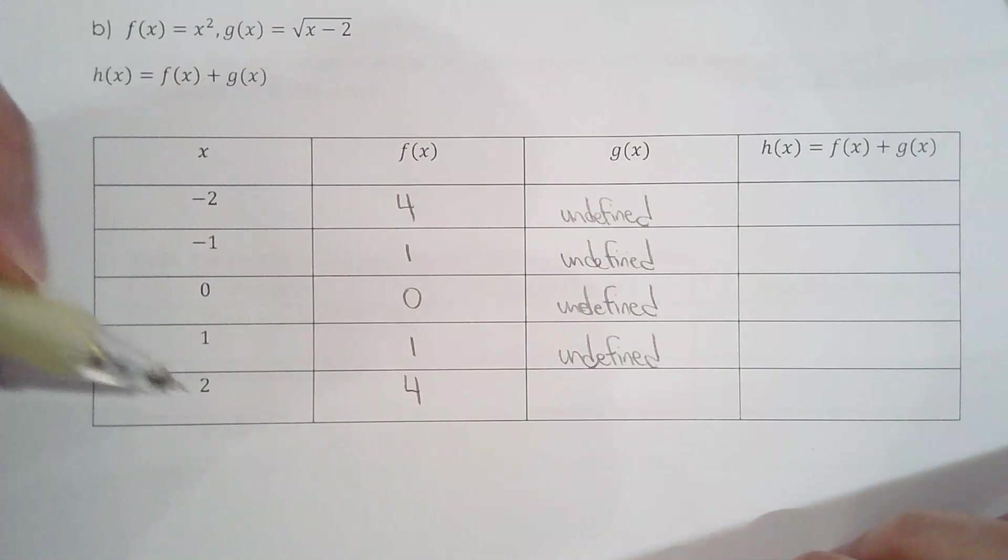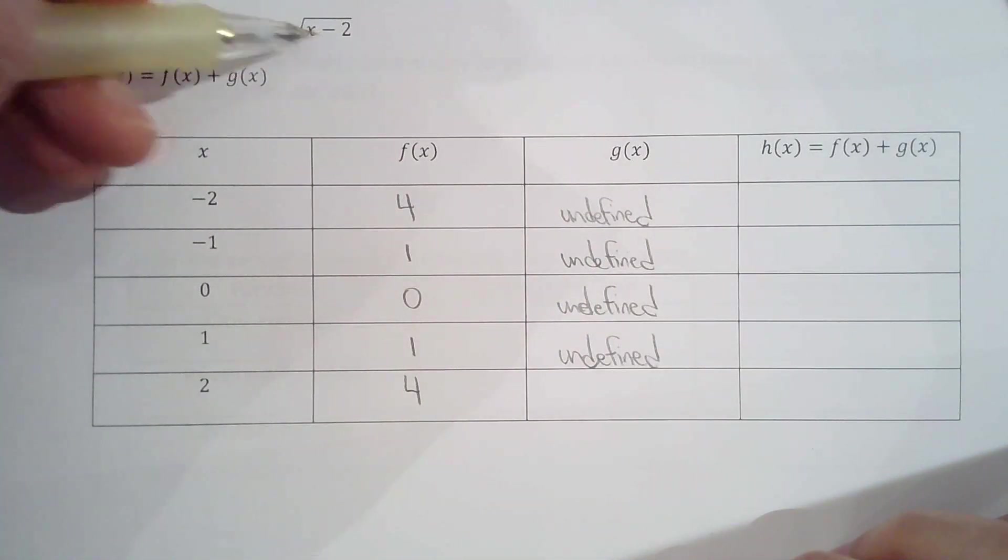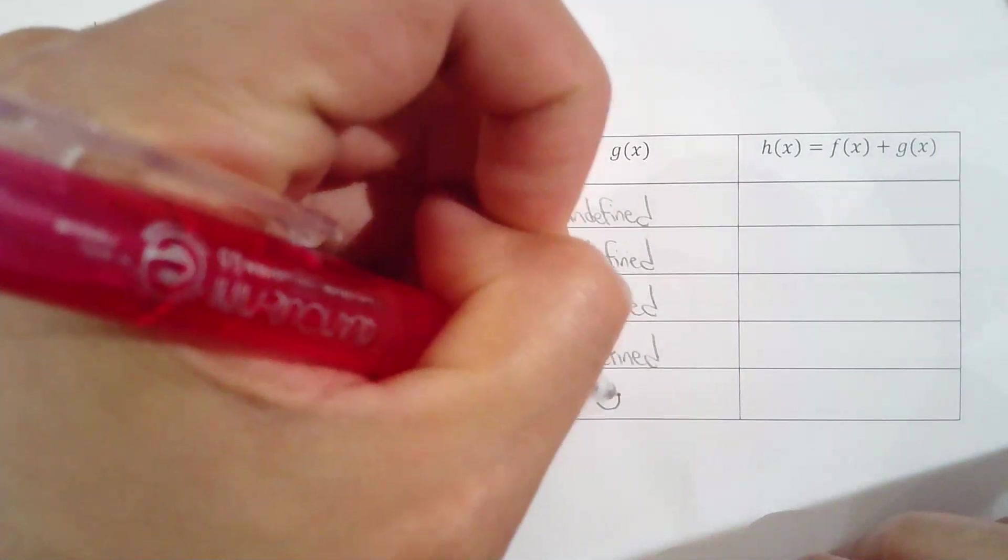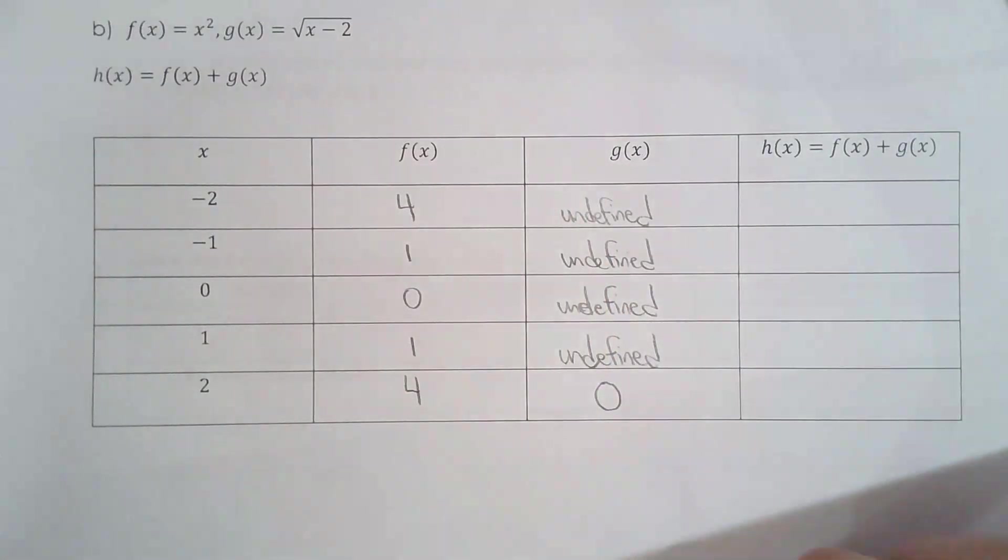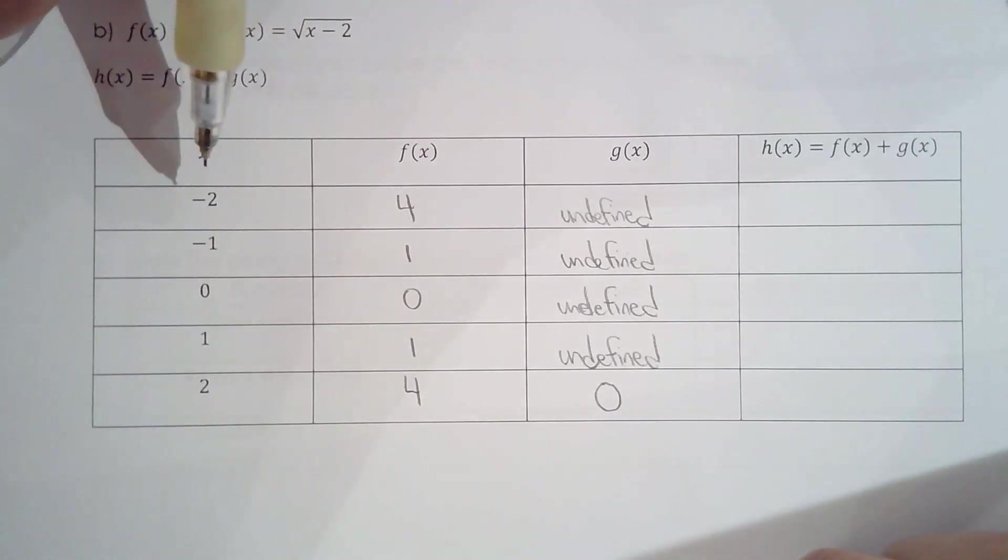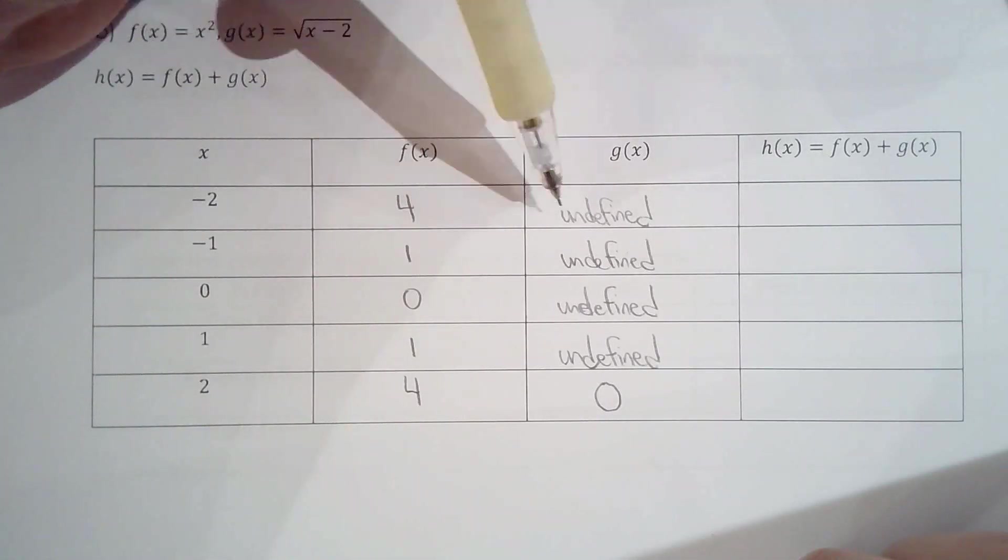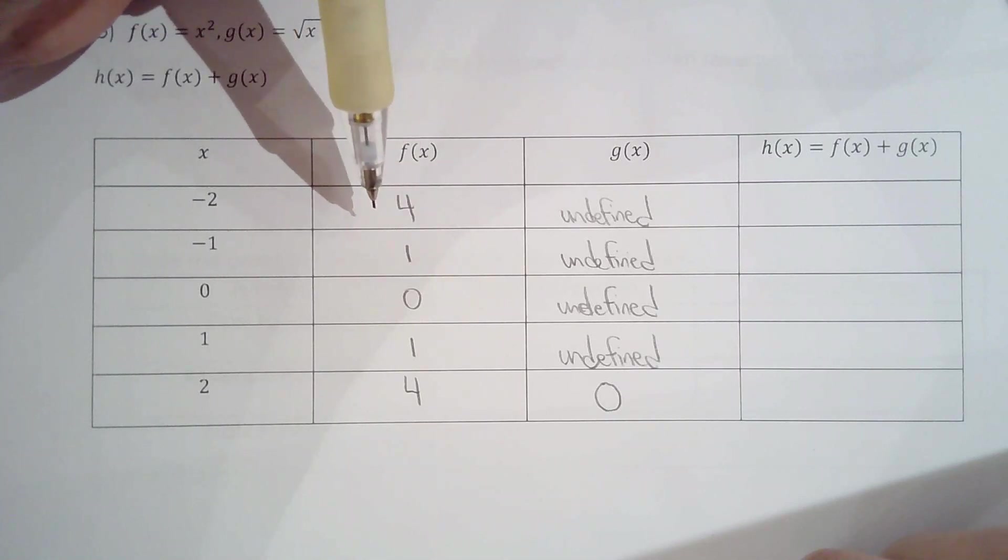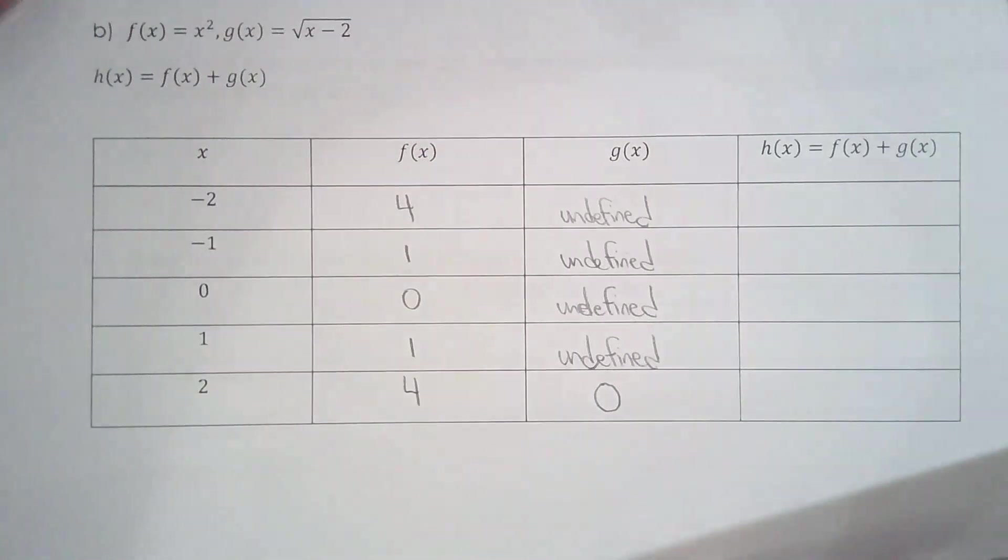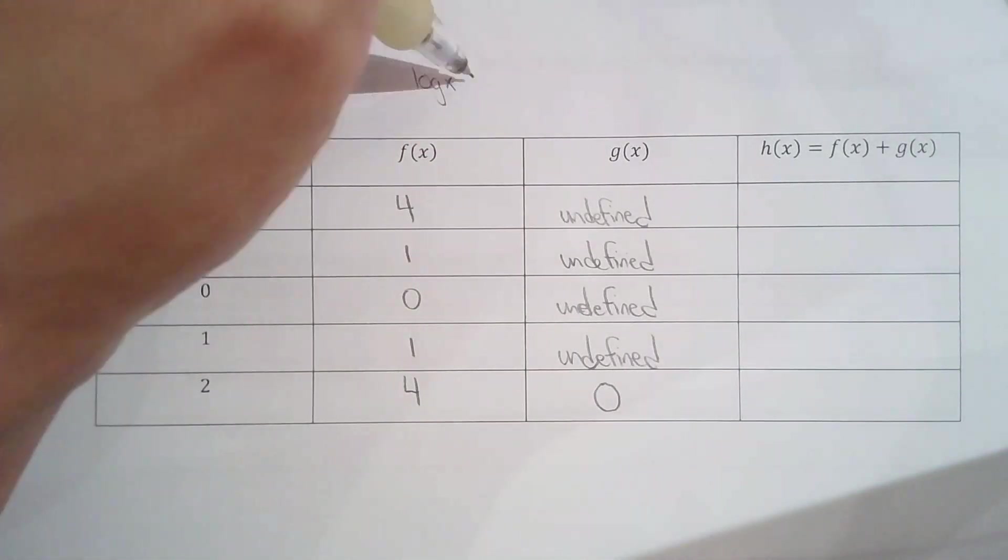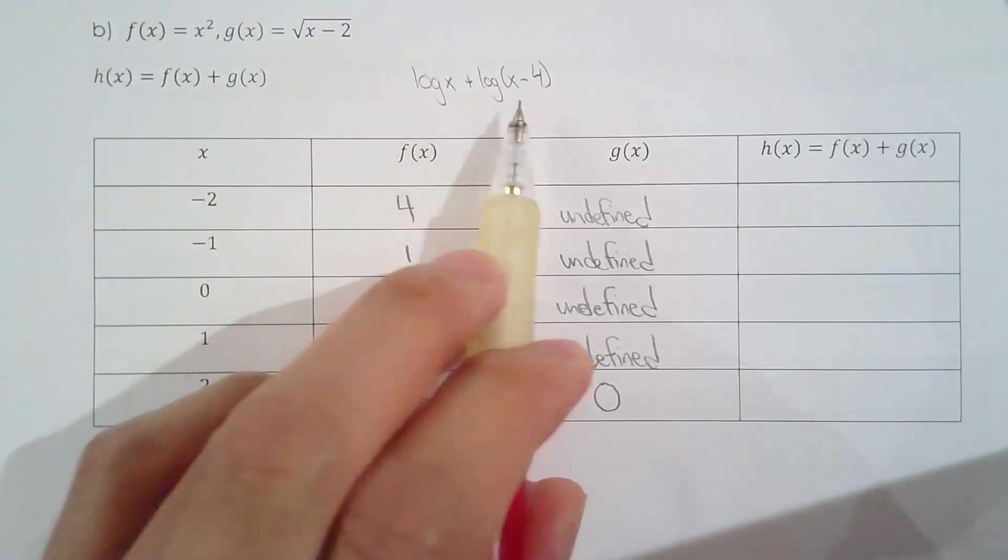Now 1, undefined. Well, this is not looking very promising. Let's try g of 2: 2 minus 2 is 0, root of 0 is 0. What is h of negative 2? What is 4 plus undefined?